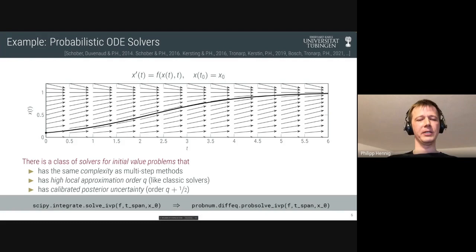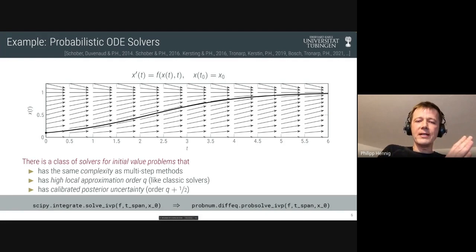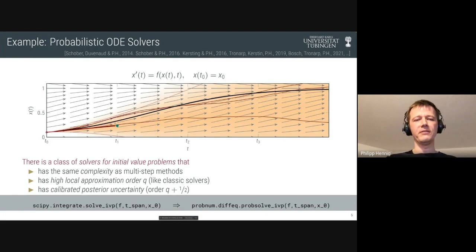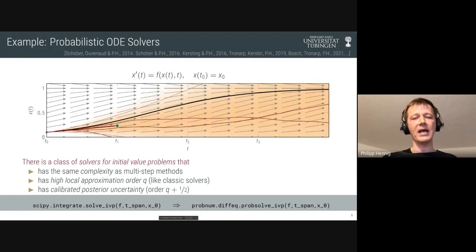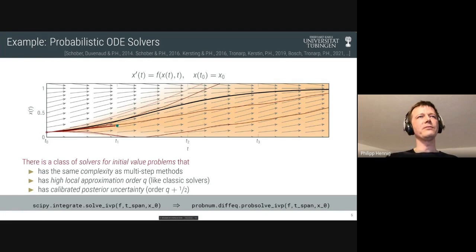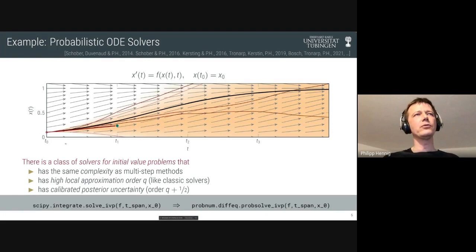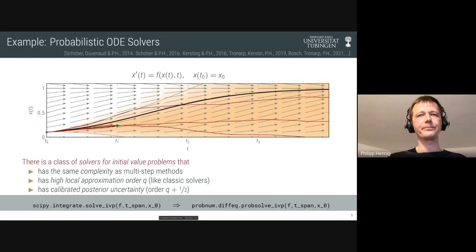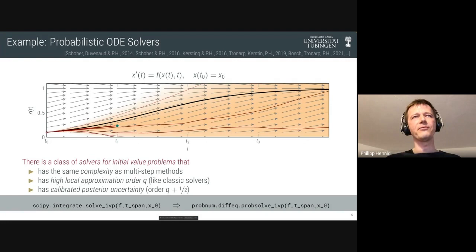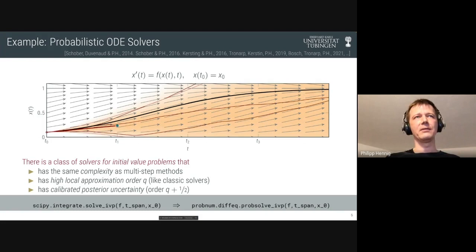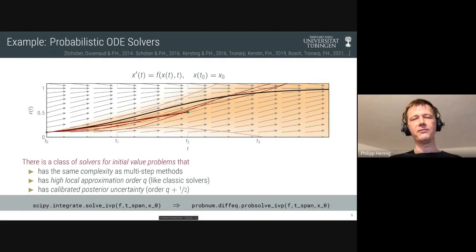There are algorithms that do this — like scipy odeint or JAX's experimental ODE. Let me tell you how to think about them as an inference problem. Given that this curve goes through the initial point, we evaluate the vector field at that point, getting an observation of the gradient of the curve there. We take a Gaussian process and condition it on this gradient observation and the initial value. The GP posterior gives us an extrapolation forward to a next time step, where we can evaluate the vector field again and iterate forward through time.